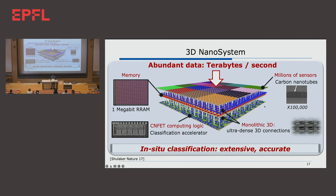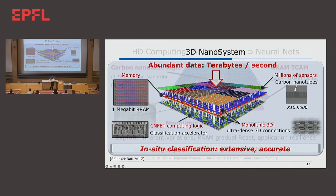Let me show you some examples of this nanosystems hardware. This is a 3D nanosystem — kind of old by now, from 2017. This was the first demonstration where we had silicon transistors, carbon nanotube transistors, a megabit of resistive RAM, and millions of carbon nanotube transistors as sensors on top. It was sensing data at up to terabytes per second, capturing it and storing it in on-chip memory, then performing machine learning computation using support vector machine — the dream of Edge AI IoT with sensing, storage, and compute on a single chip.